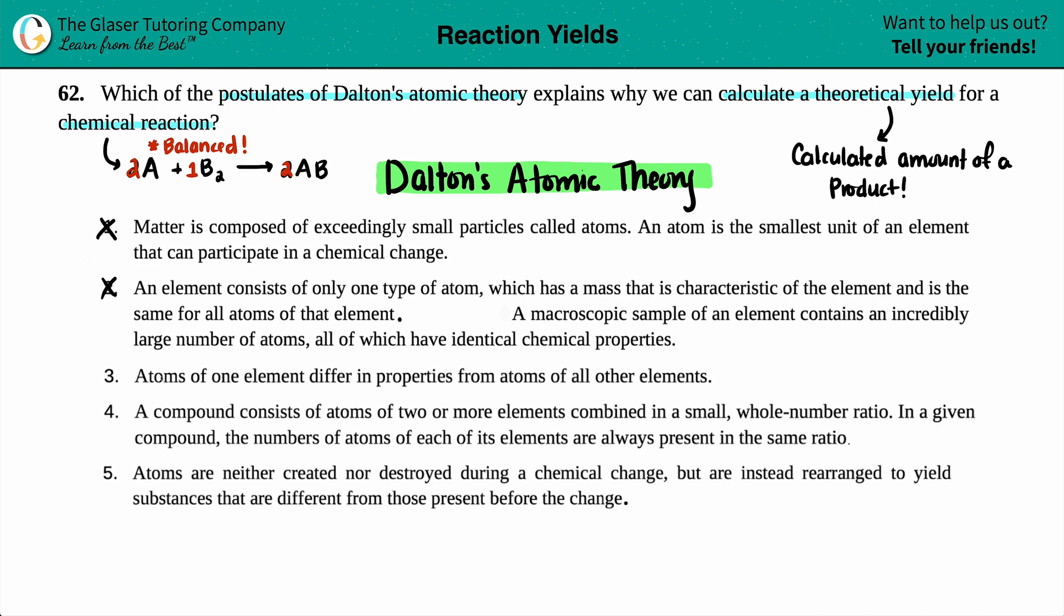Number three, atoms of one element differ in properties from atoms of all other elements. That just means that all elements are very different, right? Because of the atomic number. So this one's out.